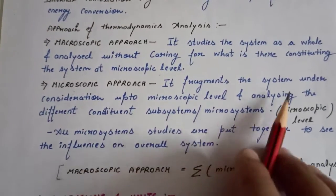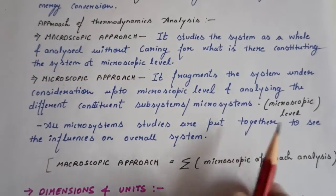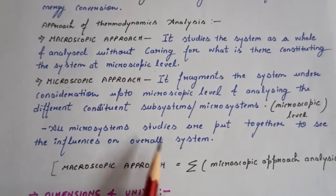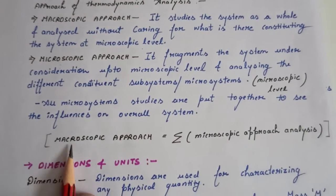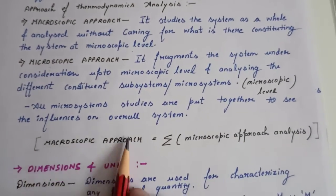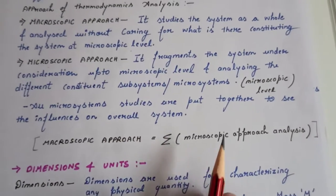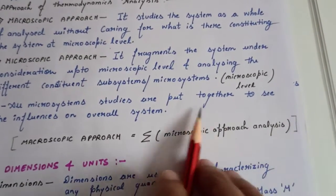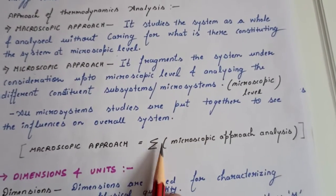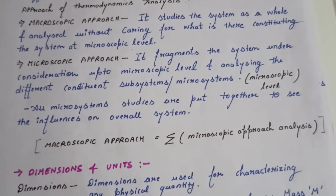All these microscopic studies are put together to see the influences on the overall system. Therefore we can conclude that macroscopic approach is the summation of microscopic approach analysis.